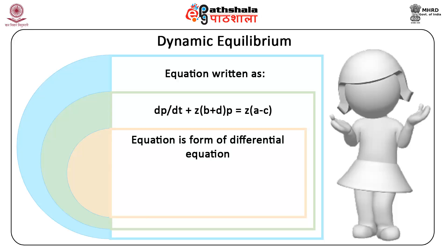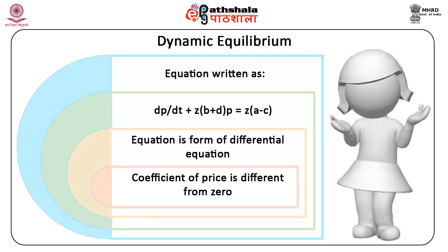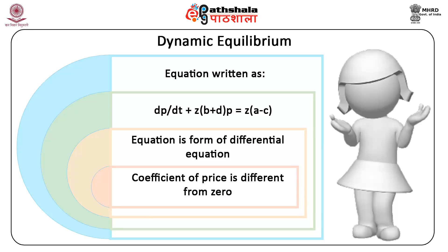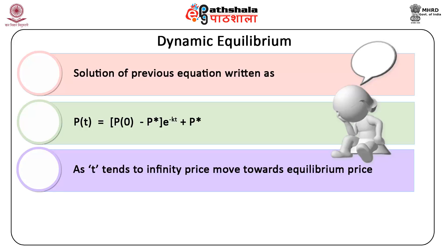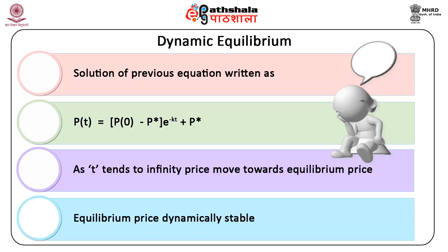This equation is a form of differential equation and the coefficient of price is different from zero. The solution can be written as: p(t) = (p0 − p*) · e^(−kt) + p*. This states that as t tends to infinity, price moves towards the equilibrium price, and the equilibrium price is dynamically stable.